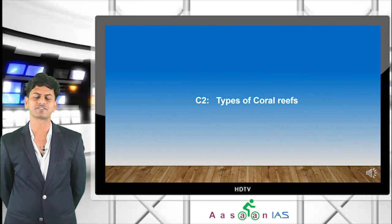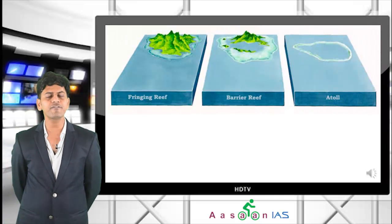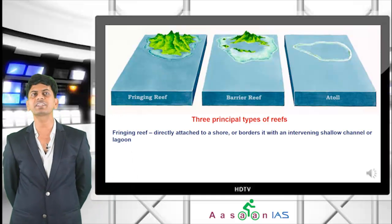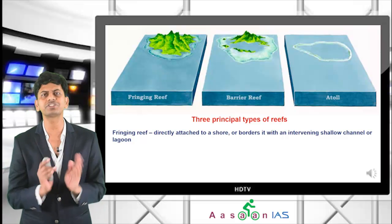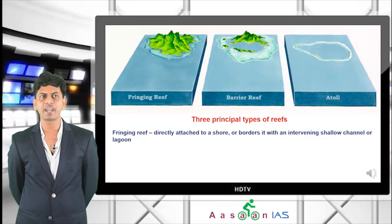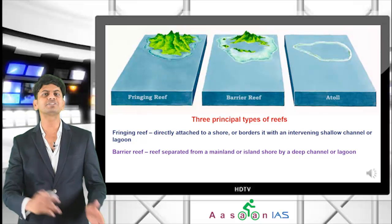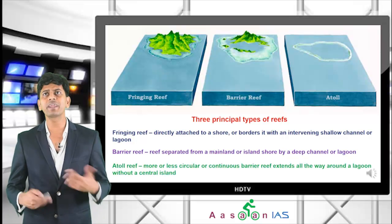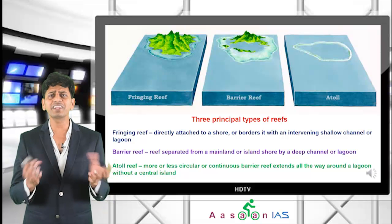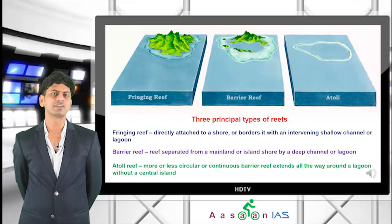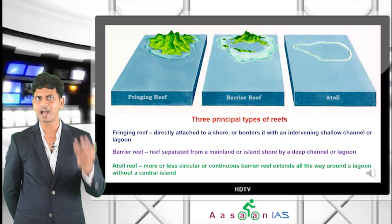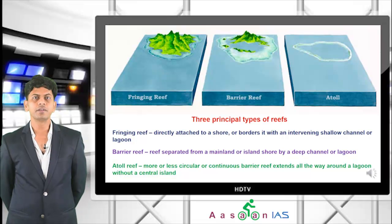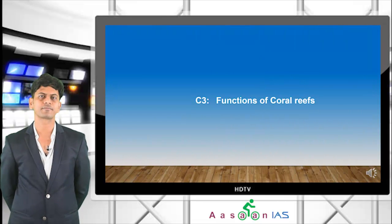Coral reefs are classified into three types: fringing reef, barrier reef, and atoll. Fringing reefs are almost directly attached to a shore or separated by a shallow channel. Barrier reefs are separated from the mainland by a deep channel or lagoon. Atolls have no mainland at all — they are mostly circular and continuous, extending without any particular shore.